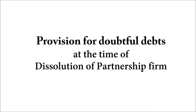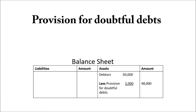You know that provision for doubtful debt is shown in the balance sheet, and it is shown as a deduction from debtors. So if debtors are 50,000 and provision is 2,000, you deduct 2,000 from 50,000 and you show 48,000.